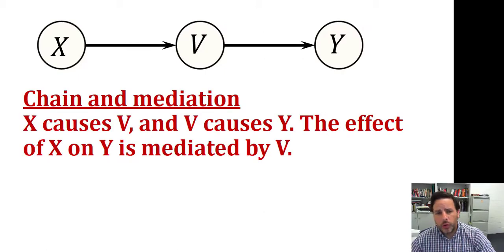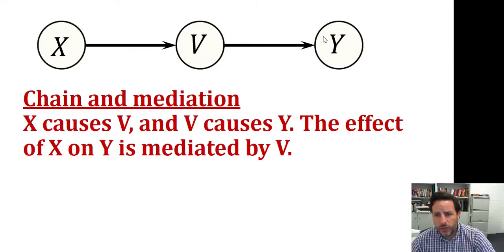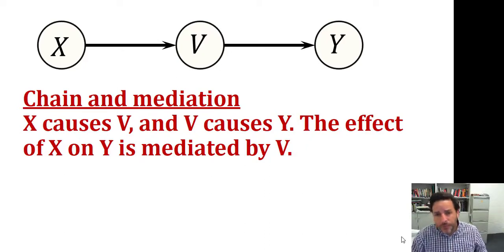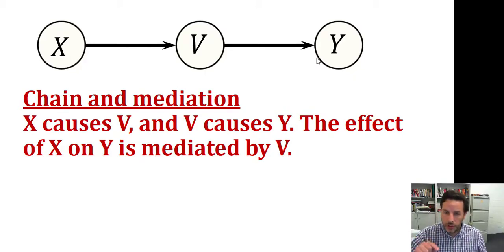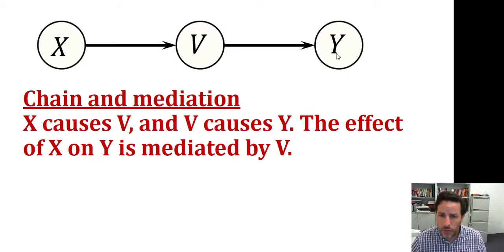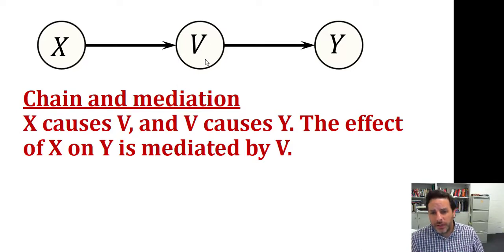In this case we've got a causal chain. We've got three variables: x causes v, and v causes y. Now this model is saying something else — that variable x doesn't cause variable y independently from the relationship between v and y; otherwise it should have an arrow here. What it's also saying is that variable v mediates the relationship between x and y.